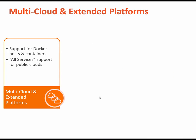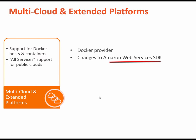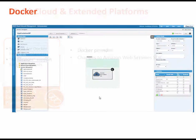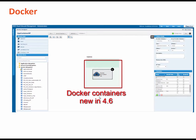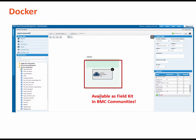In 4.6, support was added for Docker as a provider. We also made important changes to the AWS Software Development Kit. For AWS, plumbing was included for external templates. Docker support is completely new in 4.6. You now can provision Docker containers on Docker hosts, which are located either on-premise or on the public cloud. This feature is available as a field kit on the BMC Cloud Lifecycle Management community.